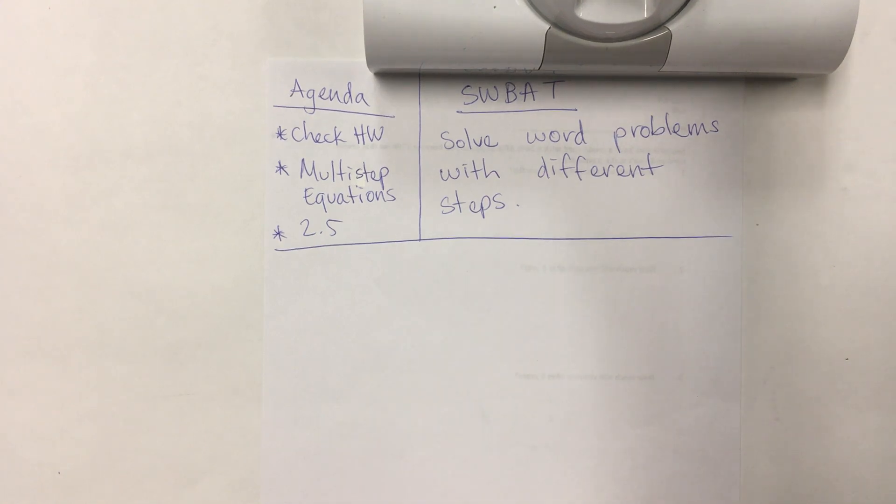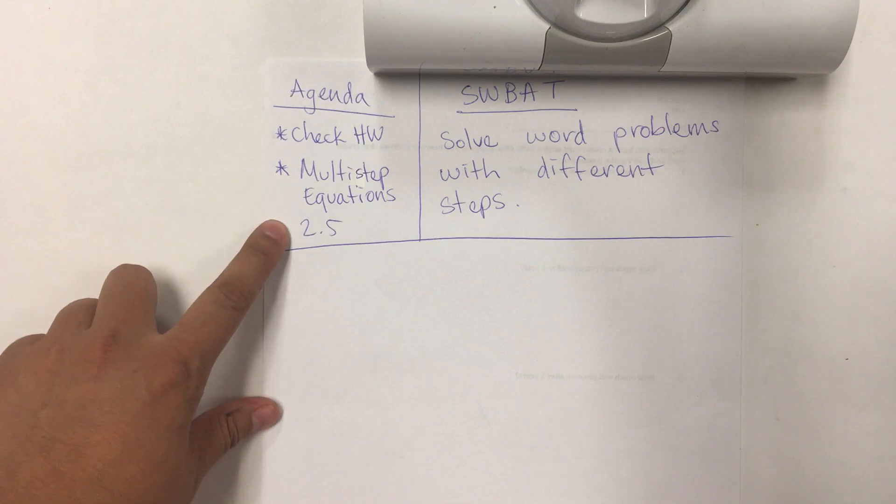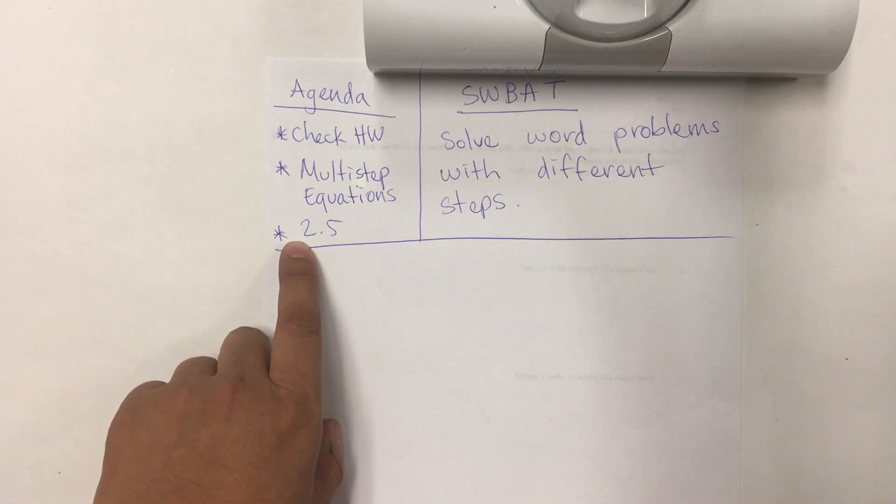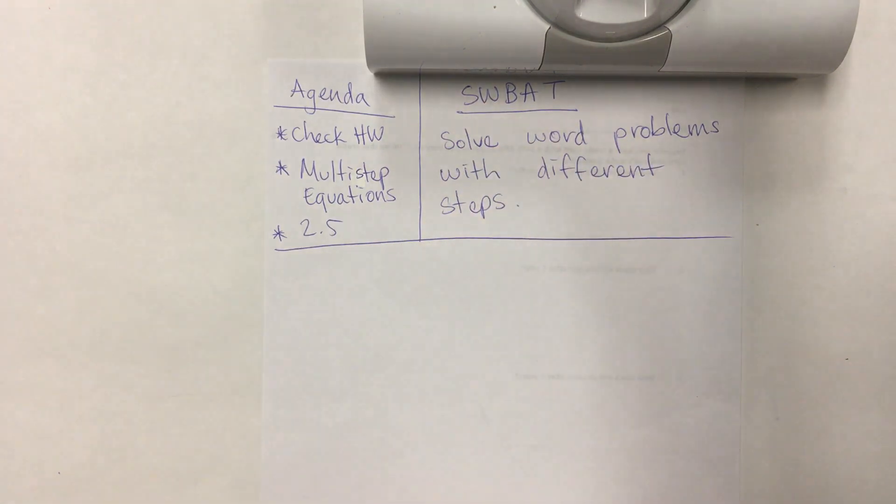Hello students, today's agenda is to check homework. We're going to be working on multi-step equations from word problems and you'll be doing 2.5. Today's students will be able to solve word problems with different steps.